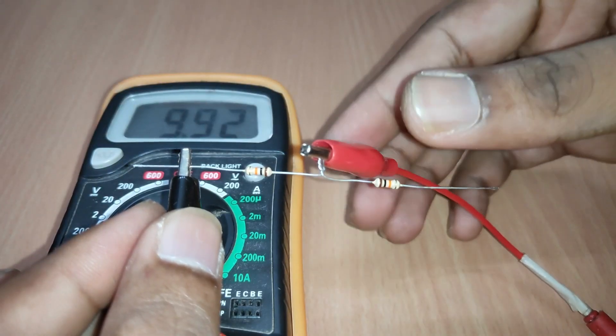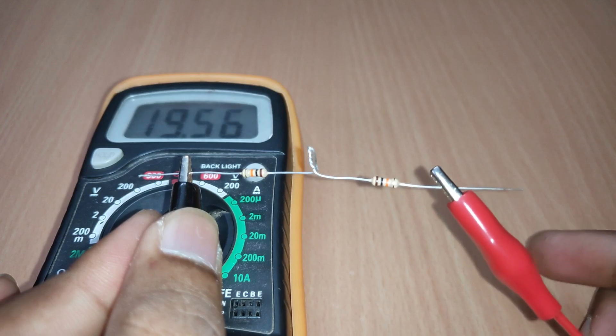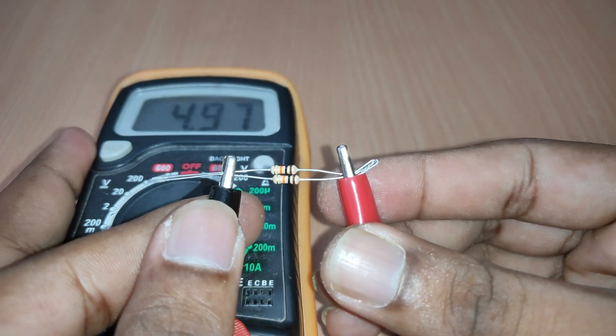Now to get different resistance values, we can either put them in series to increase the resistance or in parallel to decrease the resistance.